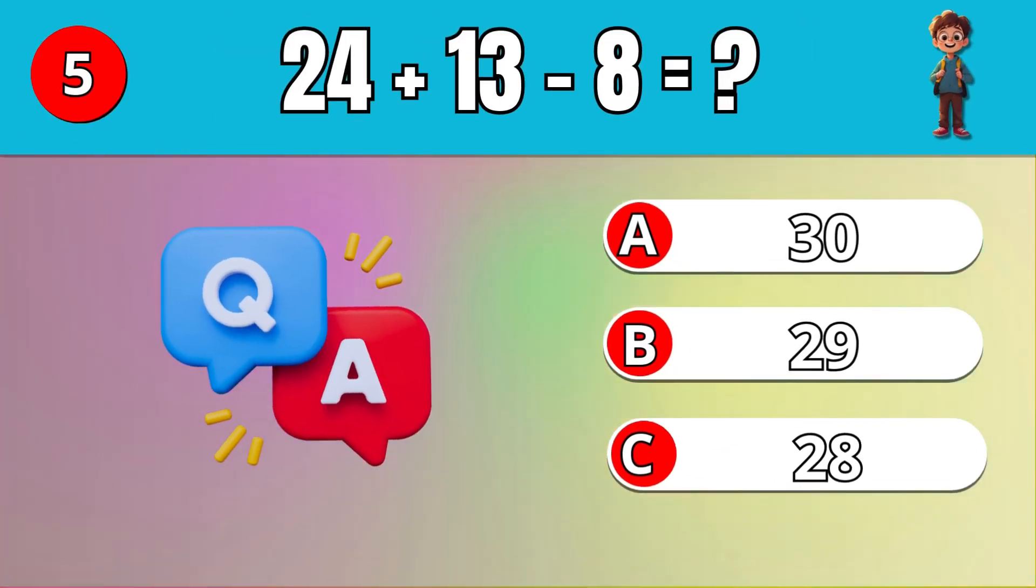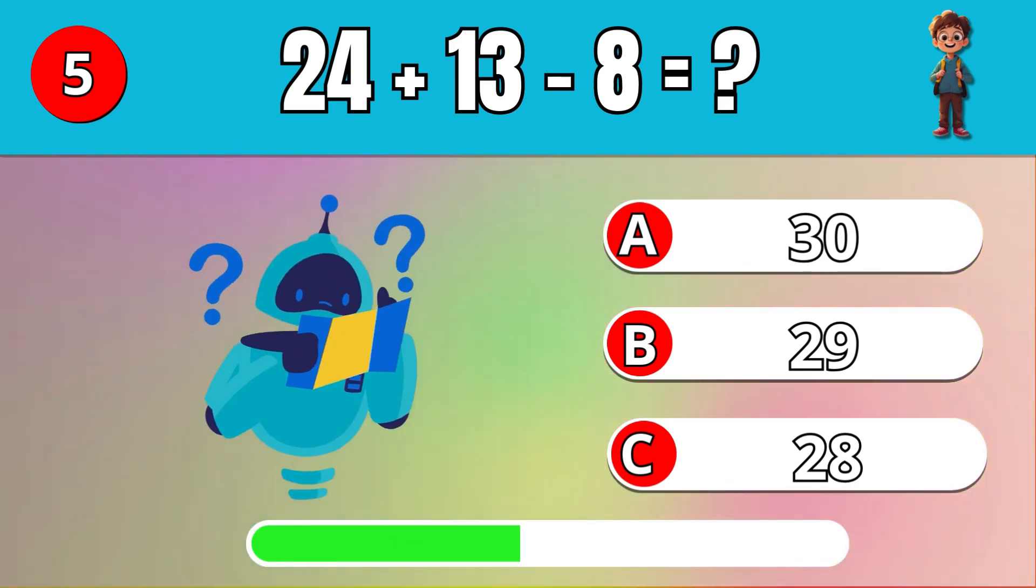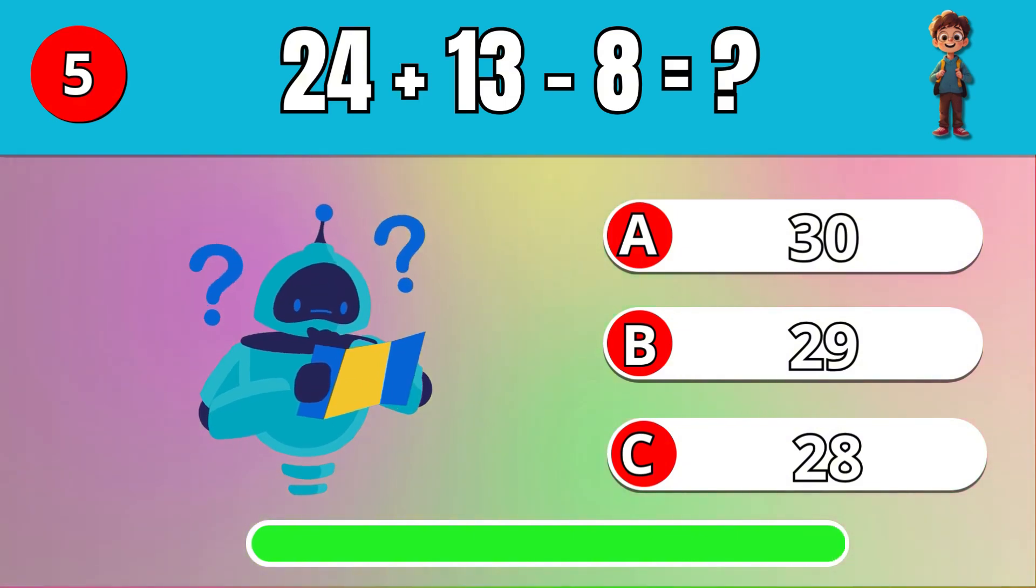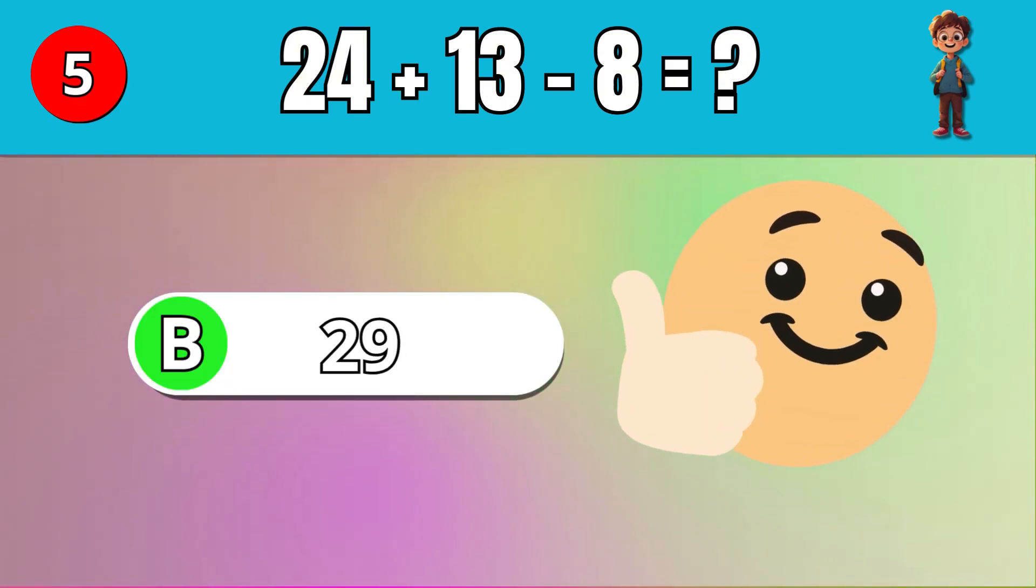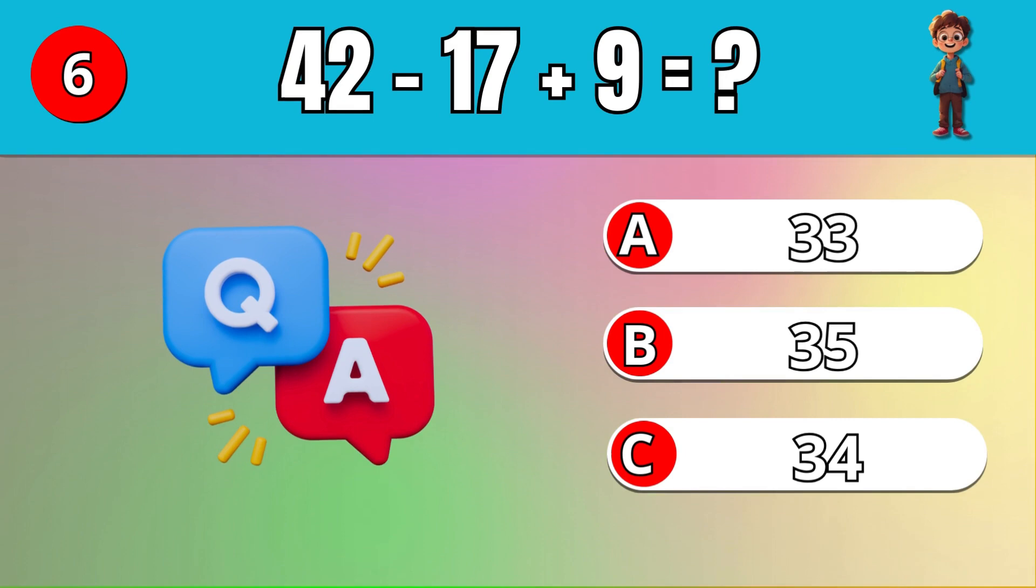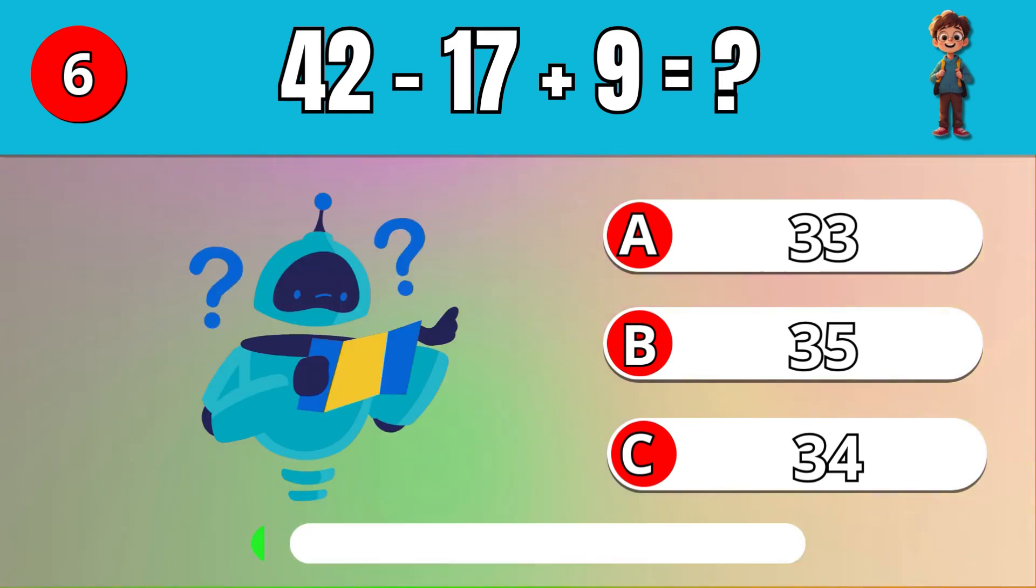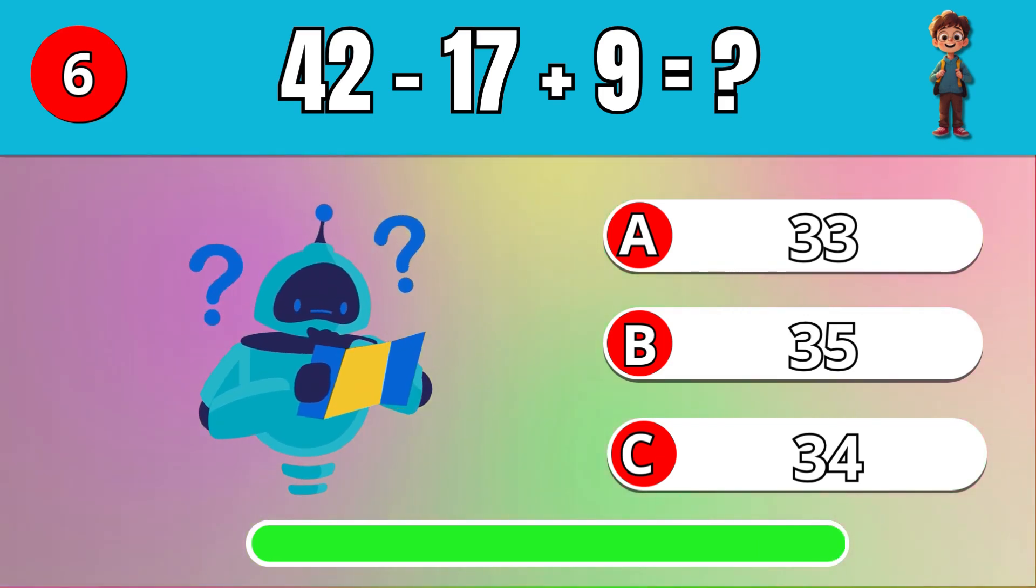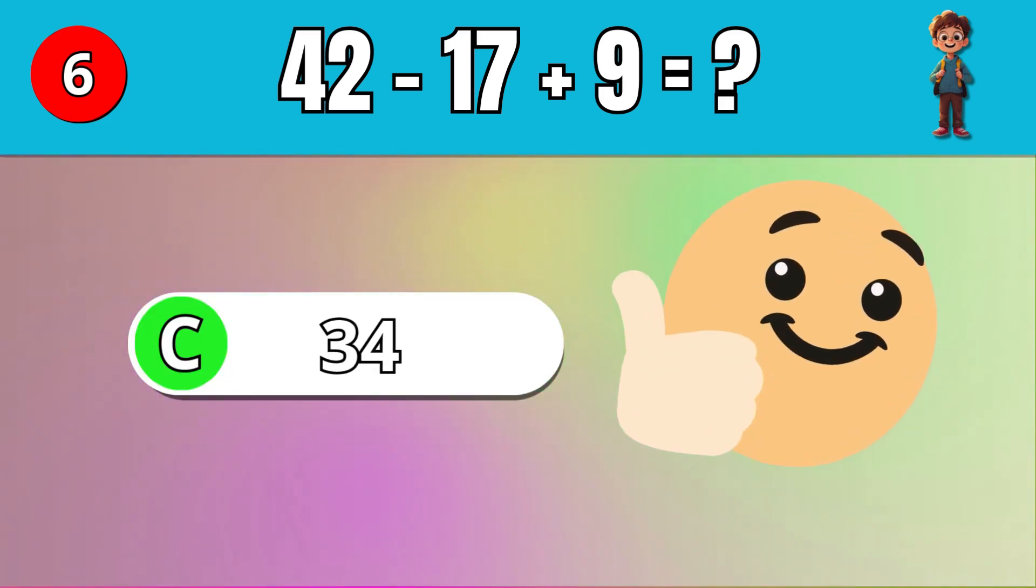What is 24 plus 13 minus 8? B, 29. What is 42 minus 17 plus 9? C, 34.